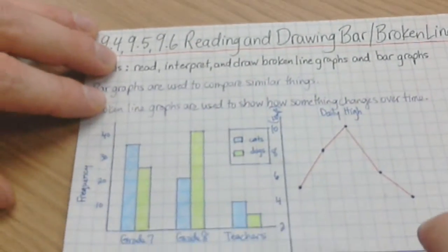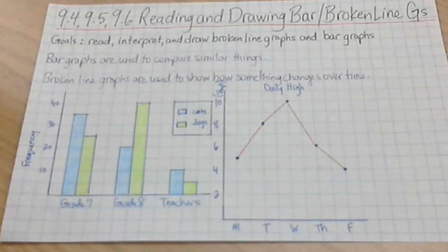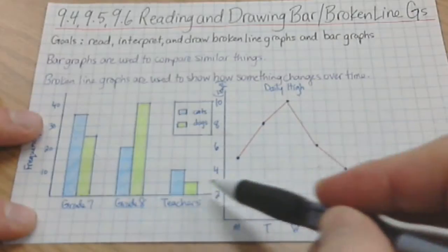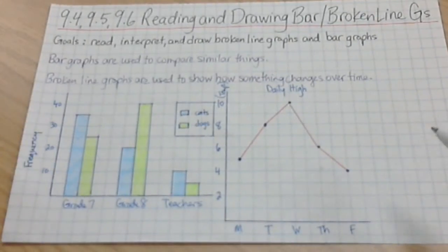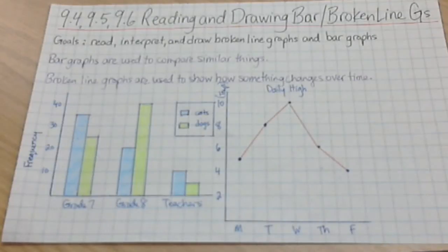So what I'm going to show you is basically an example of each. And my hope is that by showing you these two examples, you'll be able to do a couple of things. To read bar graphs, to interpret the information that's on there, and to take some ideas about how to draw your own bar graphs and broken line graphs.